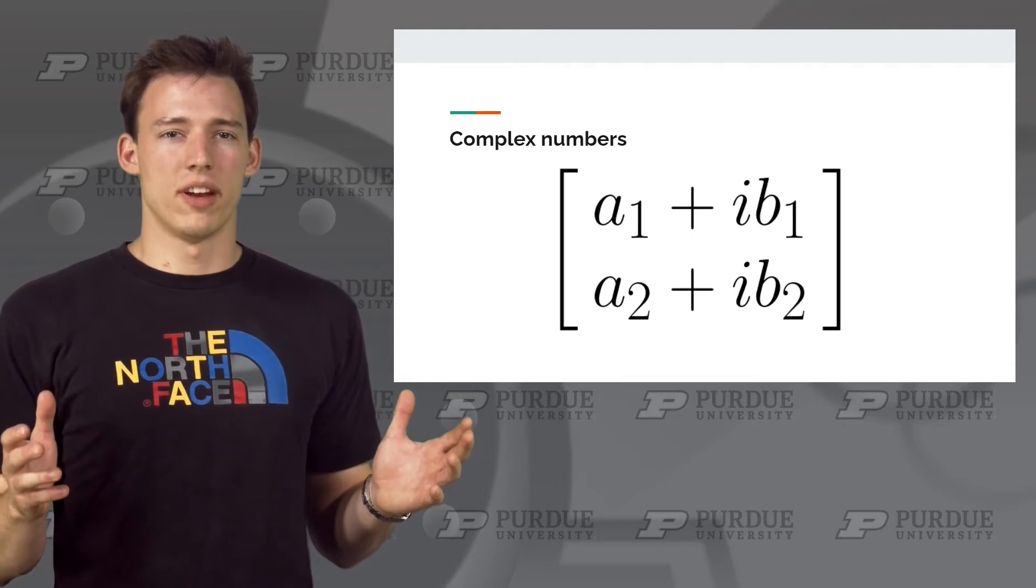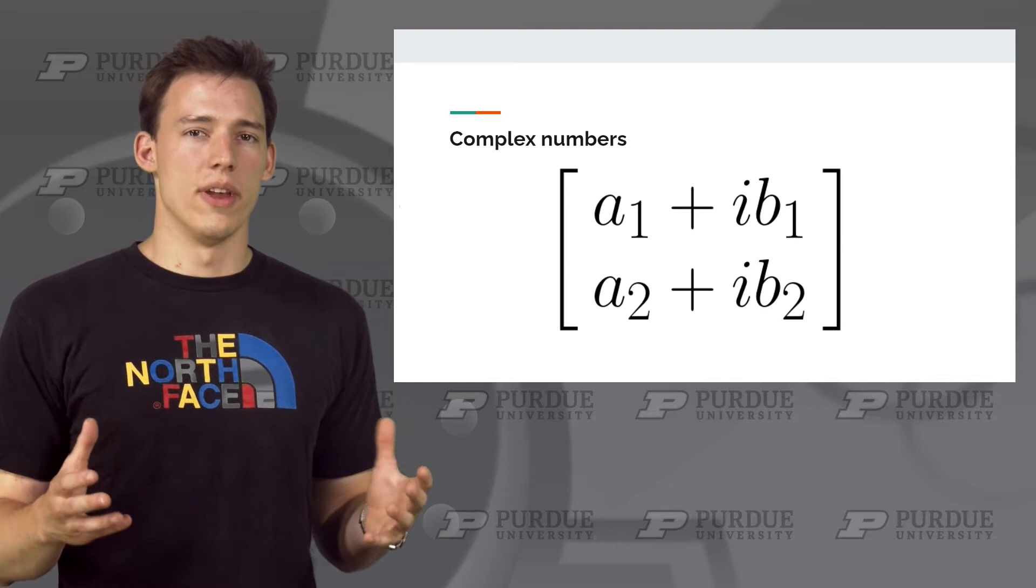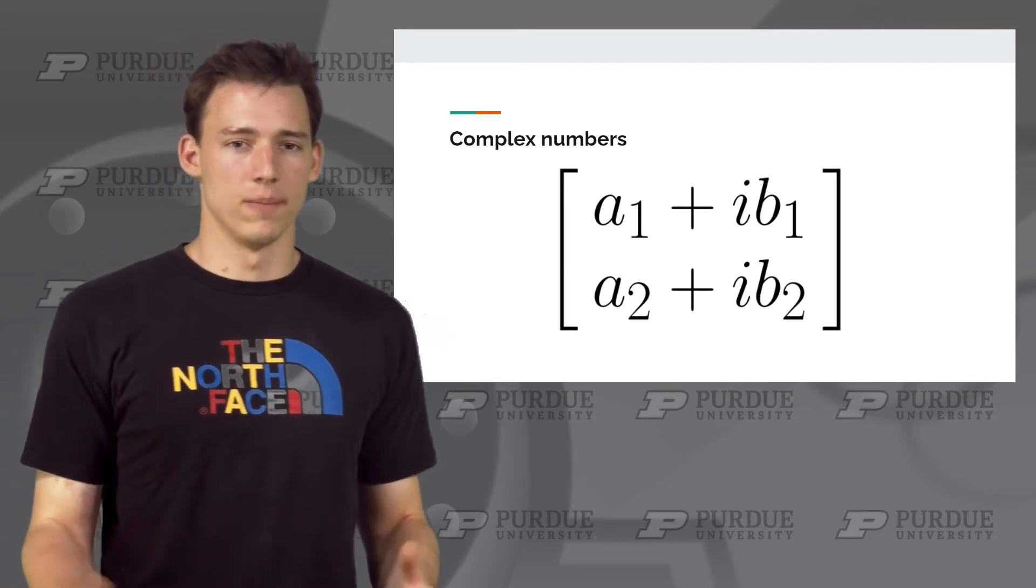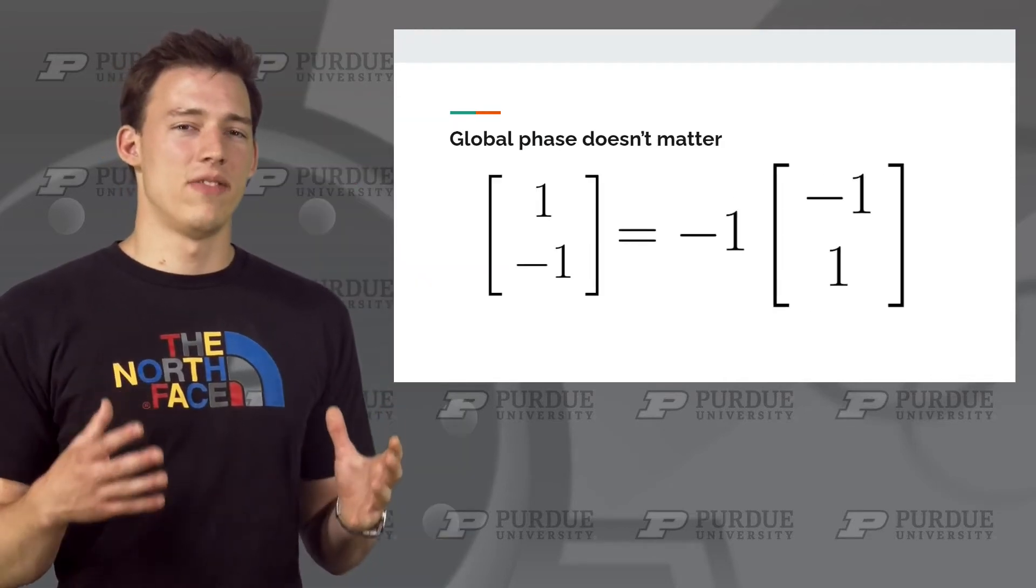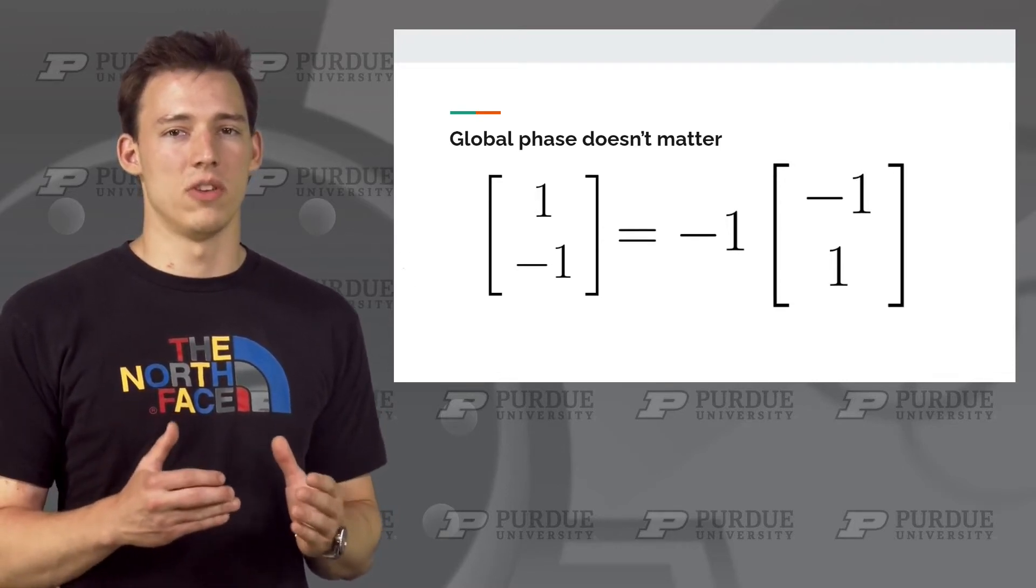So now we have a new problem. Instead of not having enough dimensions, we now have one too many. So what other lens can we look at a state like this through in order to place it onto a three-dimensional sphere? The reason we can place this vector onto a three-dimensional sphere is due to the fact that global phase does not actually affect a qubit state.